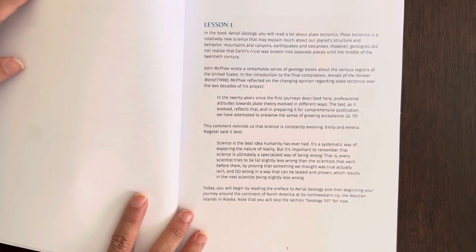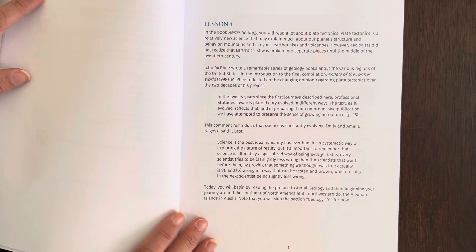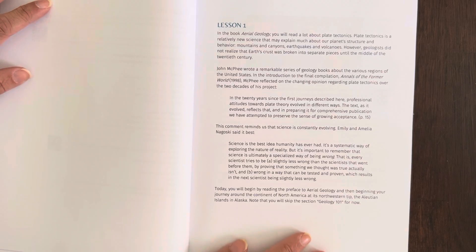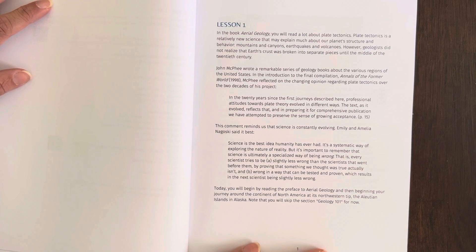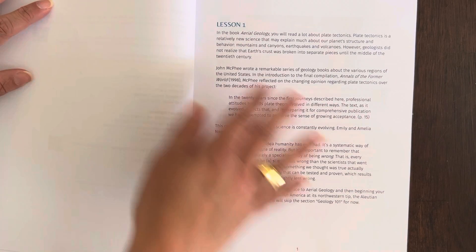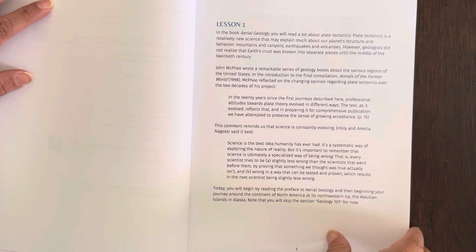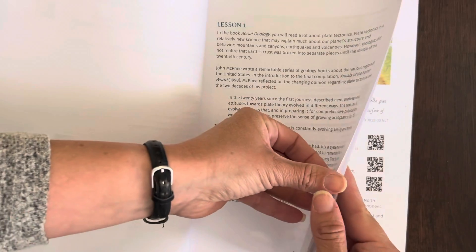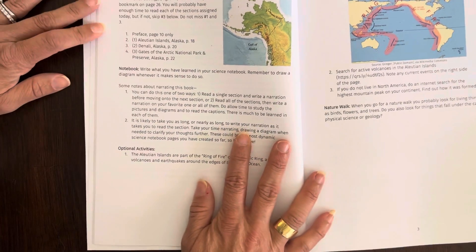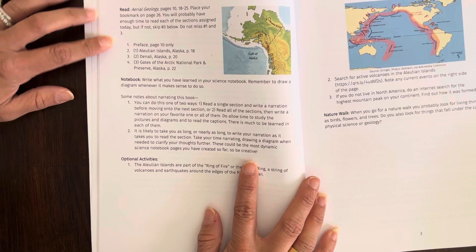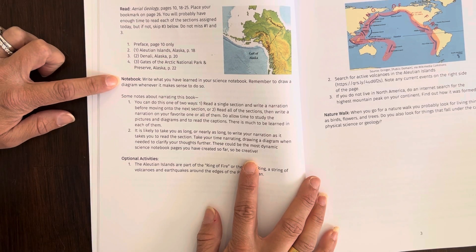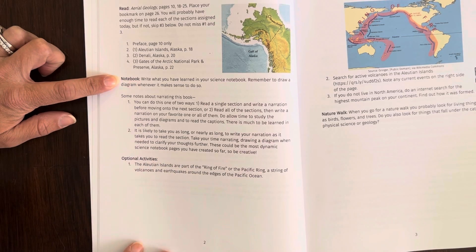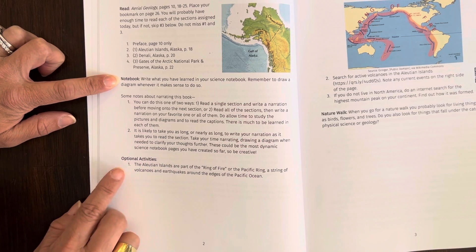If you scroll to the bottom of whichever particular guide you're looking at, it has the first three lessons, which I didn't know, so I'm glad I reached out to her. So this first lesson has kind of an overview about what you'll be reading, and then it gives you the assignments. You can see it says to read these pages, and then what to write into your notebook. It kind of explains to the students how to write a narration, what different things to do, and then there are optional activities.